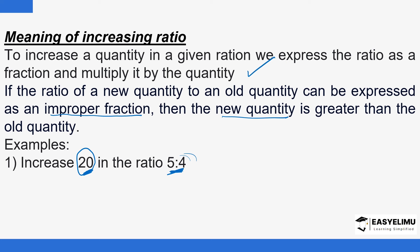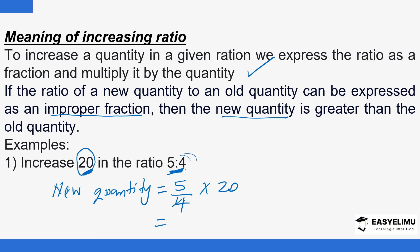The new quantity should be 5 over 4 — the first number divided by the second — and then you multiply by 20. So 4 goes into 4 once and into 20 five times, giving us 5 times 5, which is 25. So the new value is 25, which is greater than the original value of 20. The rule is: express the ratio as a fraction — 5 over 4 — and multiply by 20 to get 25.